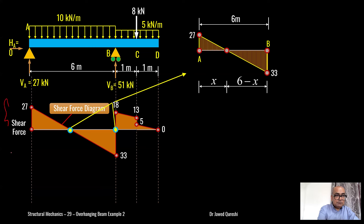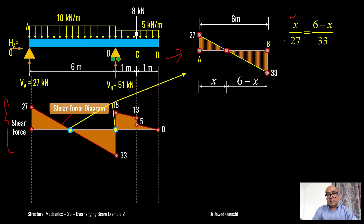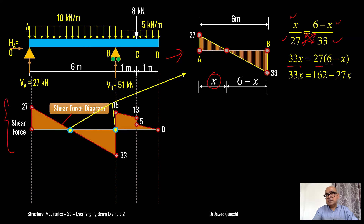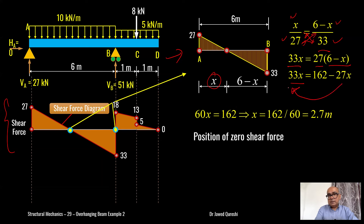If I blow up this portion of the shear force diagram, I will use similar triangles: horizontal on the left side divided by vertical on the left side equals horizontal on the right side divided by vertical on the right side. Assuming the distance is x: by cross-multiplying, 33x = 27(6 − x), which gives 60x = 162, and therefore x = 2.7 meters. This is the position of zero shear force and maximum sagging bending moment.